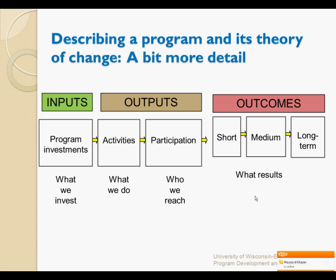Those are going to be our participation outputs — who we will reach. Then, in order to reach those participants, what activities would we have to do? That might mean community meetings, trainings, or support groups. These are our output activities — what we would do. And finally, what resources would we need to carry out these activities? Those are our inputs.